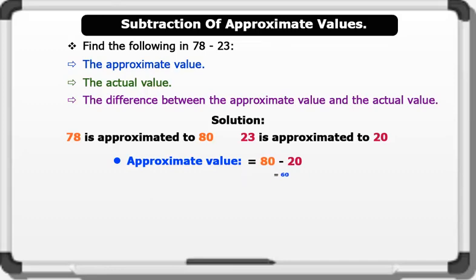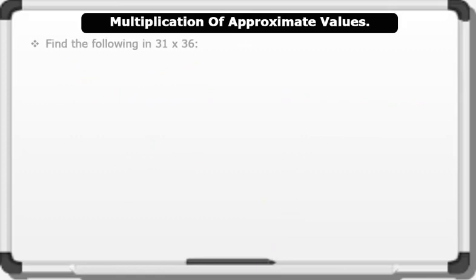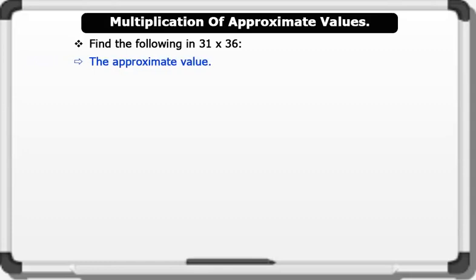Example 2: Find the approximate value, actual value, and difference for 78 minus 23. Following the approximation rules, 78 is approximated to 80 and 23 is approximated to 20, giving 60 as the approximate value. To find the actual value, we simply subtract 78 minus 23, which gives us 55. The difference between the actual value and the approximate value is 60 minus 55 equals 5. That's brilliant.